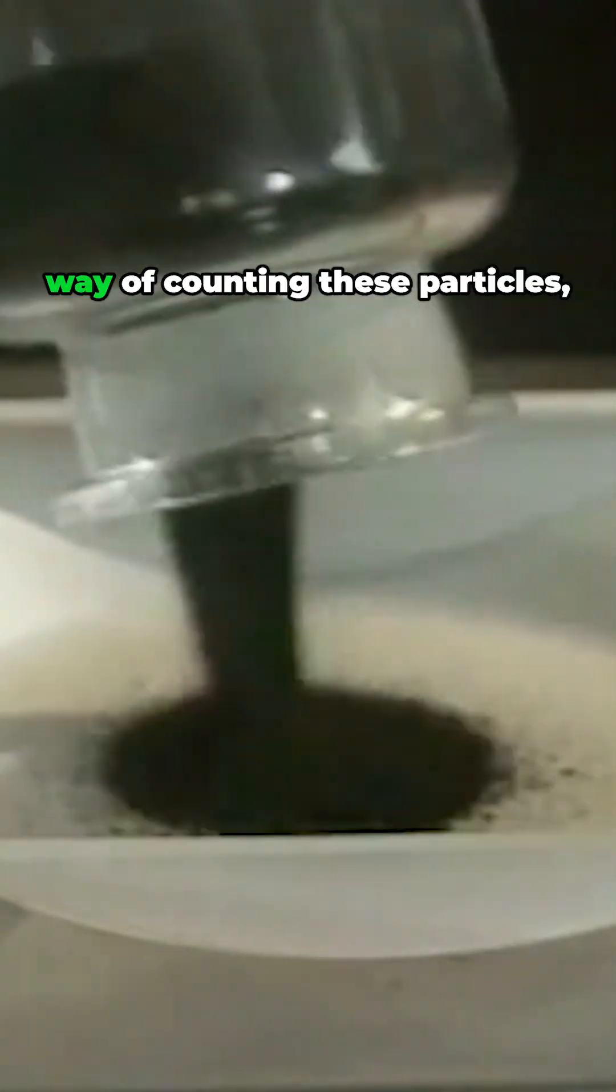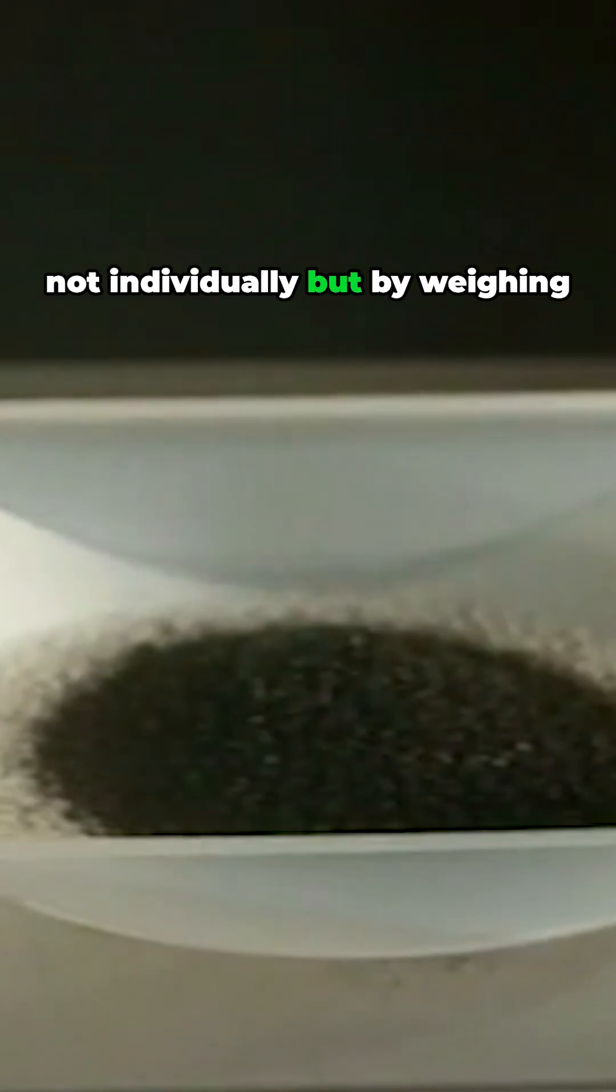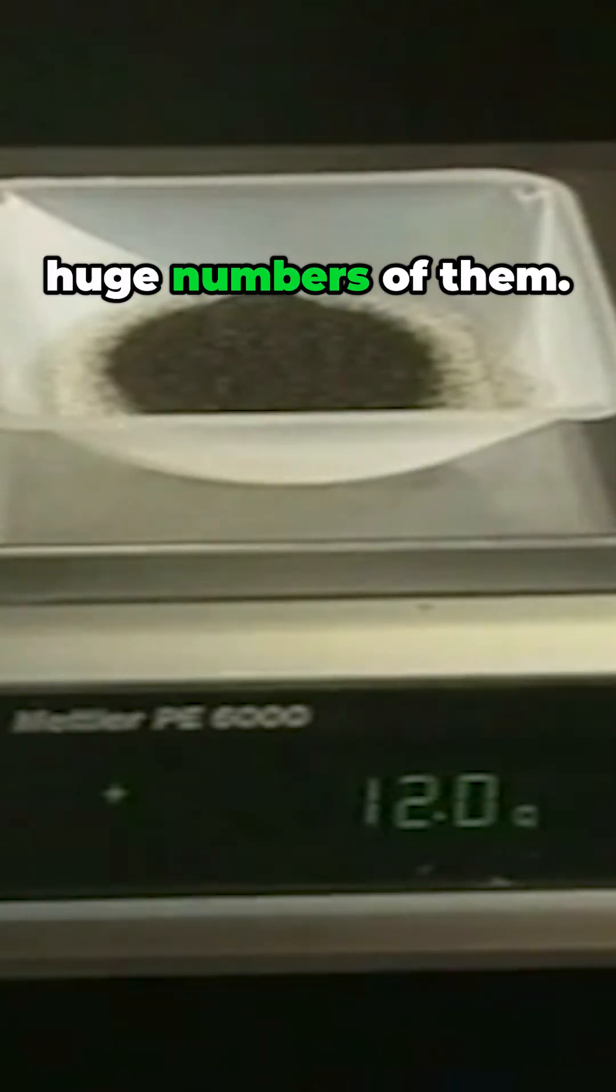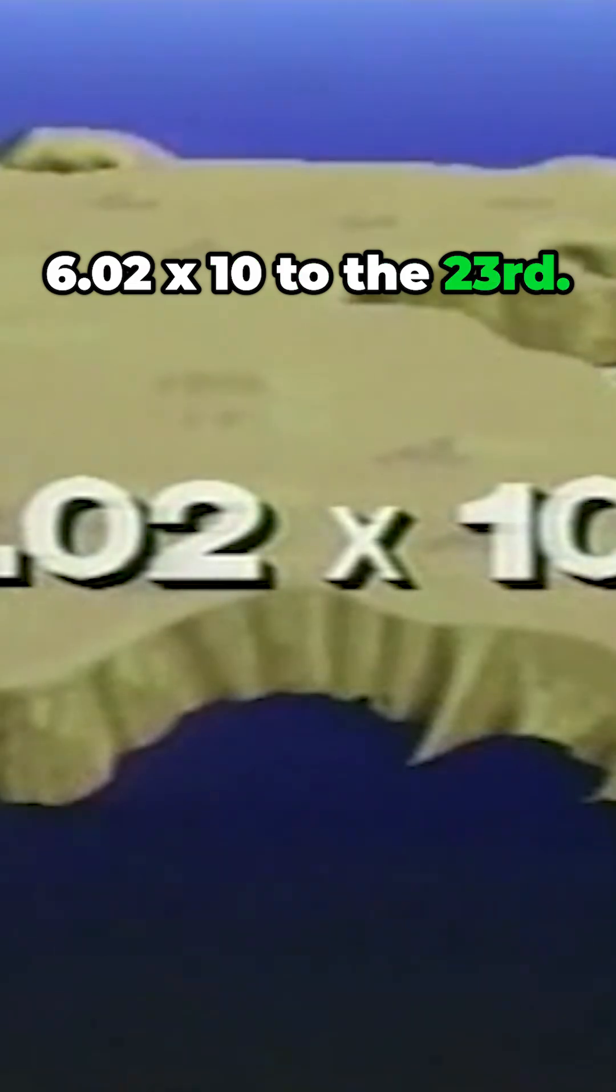Chemists have found a way of counting these particles, not individually, but by weighing huge numbers of them. The counting unit is the mole, Avogadro's number: 6.02 times 10 to the 23rd.